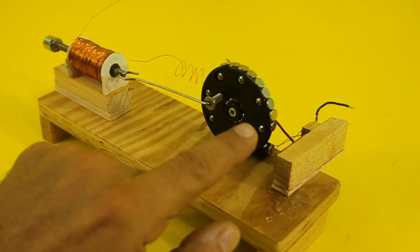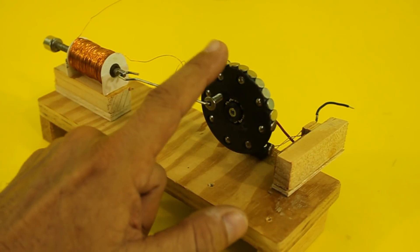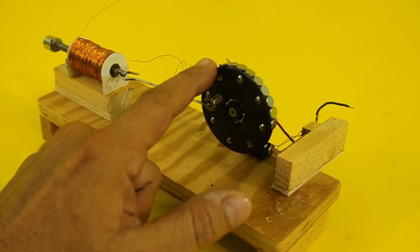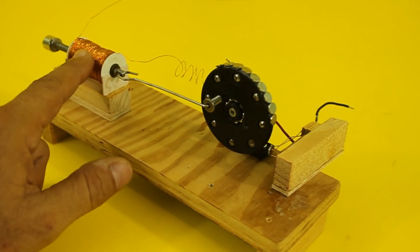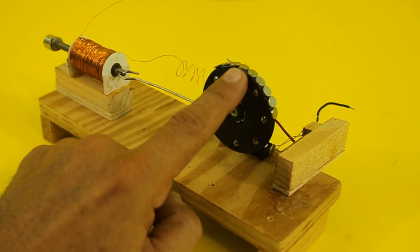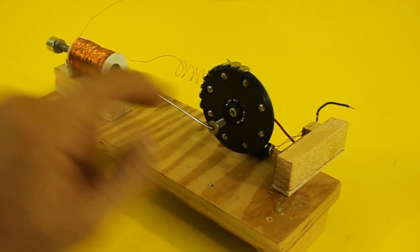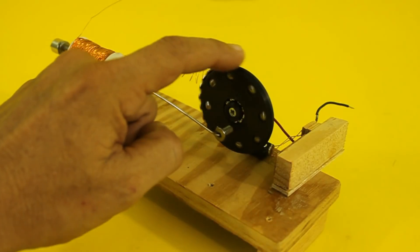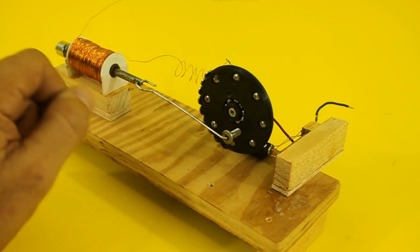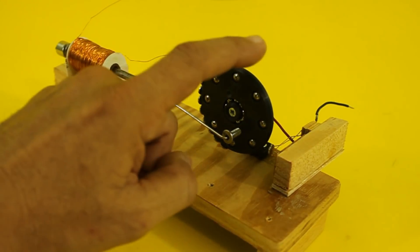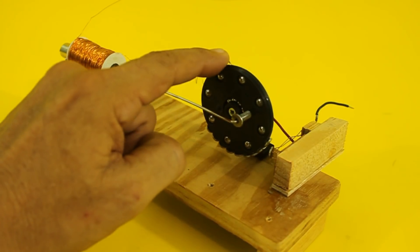When all the magnets have passed near the switch and it opens, the solenoid is no longer energized, but the flywheel continues to rotate because of its inertia until the magnets again come close to the switch and it closes again.